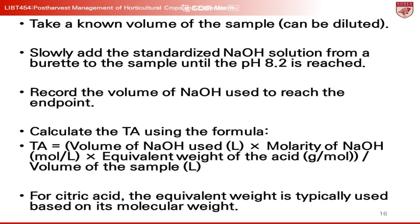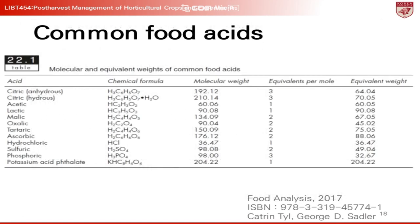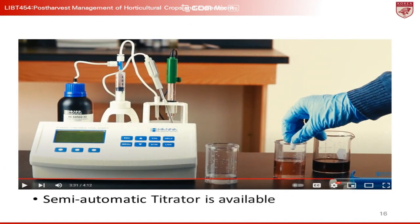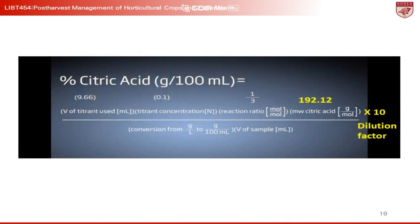Here's a simplified step-by-step process to calculate TA. Take a known volume of the sample, e.g. 10 ml of juice. Slowly add the standardized NaOH solution from a burette to the sample until pH 8.2 is reached. Record the volume of NaOH used to reach the endpoint. Calculate the TA using the formula: TA = (volume of NaOH used [L] × molarity of NaOH [mol/L] × equivalent weight of the acid [g/mol]) / volume of the sample [L]. For citric acid, the equivalent weight is typically used based on its molecular weight. The result gives you the TA as grams of the particular acid per liter of sample, which you can then convert to the desired units.